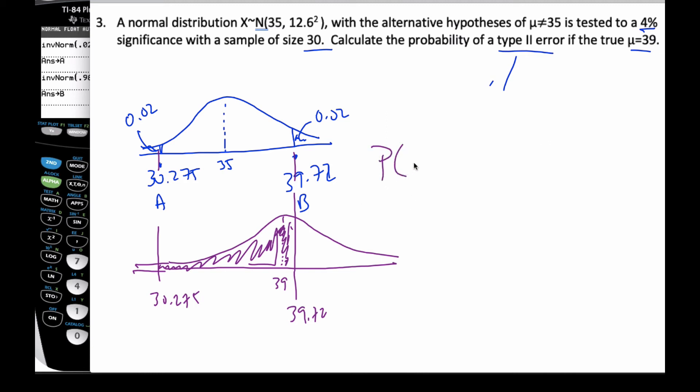So the probability of a Type II error is equal to the probability of being between 30.275 and 39.72, given that mu is equal to 39. I want to calculate this area.